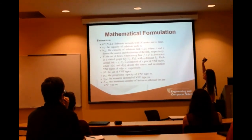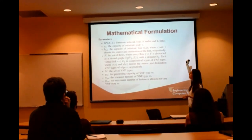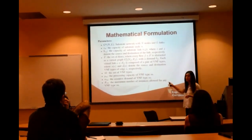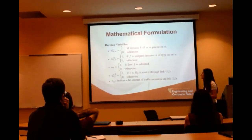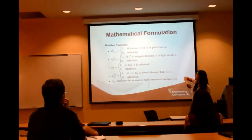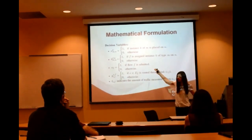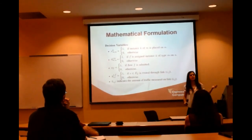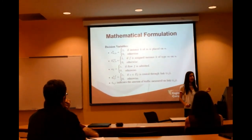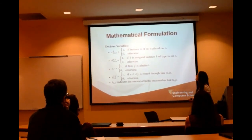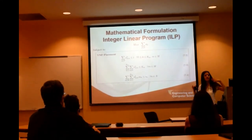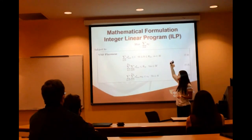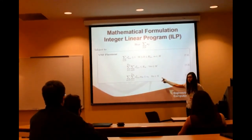For the mathematical formulation: inputs include the substrate network, its capacity, the capacity of physical links, the flows, the VNF types, the processing capacity of every VNF and its resource demands, and a maximum number of each VNF type. The decision variables are: where to place the VNF instances, which flow uses which instance, whether a flow was admitted, and the routing of flows through the instances including the amount of traffic. A flow is only admitted if it is assigned to every single instance in its chain and successfully routed through that chain.